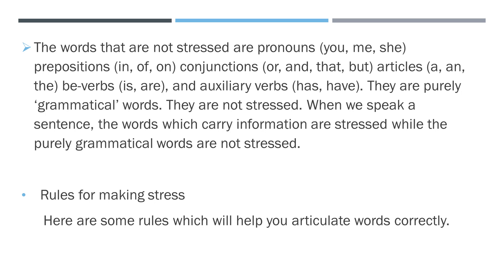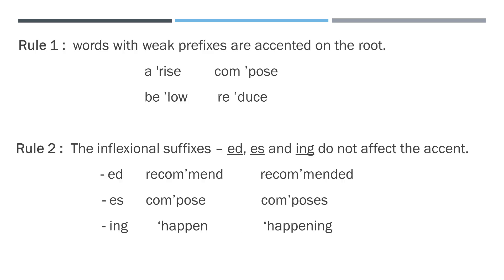There are rules for marking stress. Here are some rules which will help you articulate words correctly. The first rule is words with weak prefixes are accented on the root. A prefix is a letter or group of letters added to the beginning of a word to make a new word — for example, adding 'un-' to 'principle' makes 'unprincipled.' Examples include: arise, compose, below, reduce.